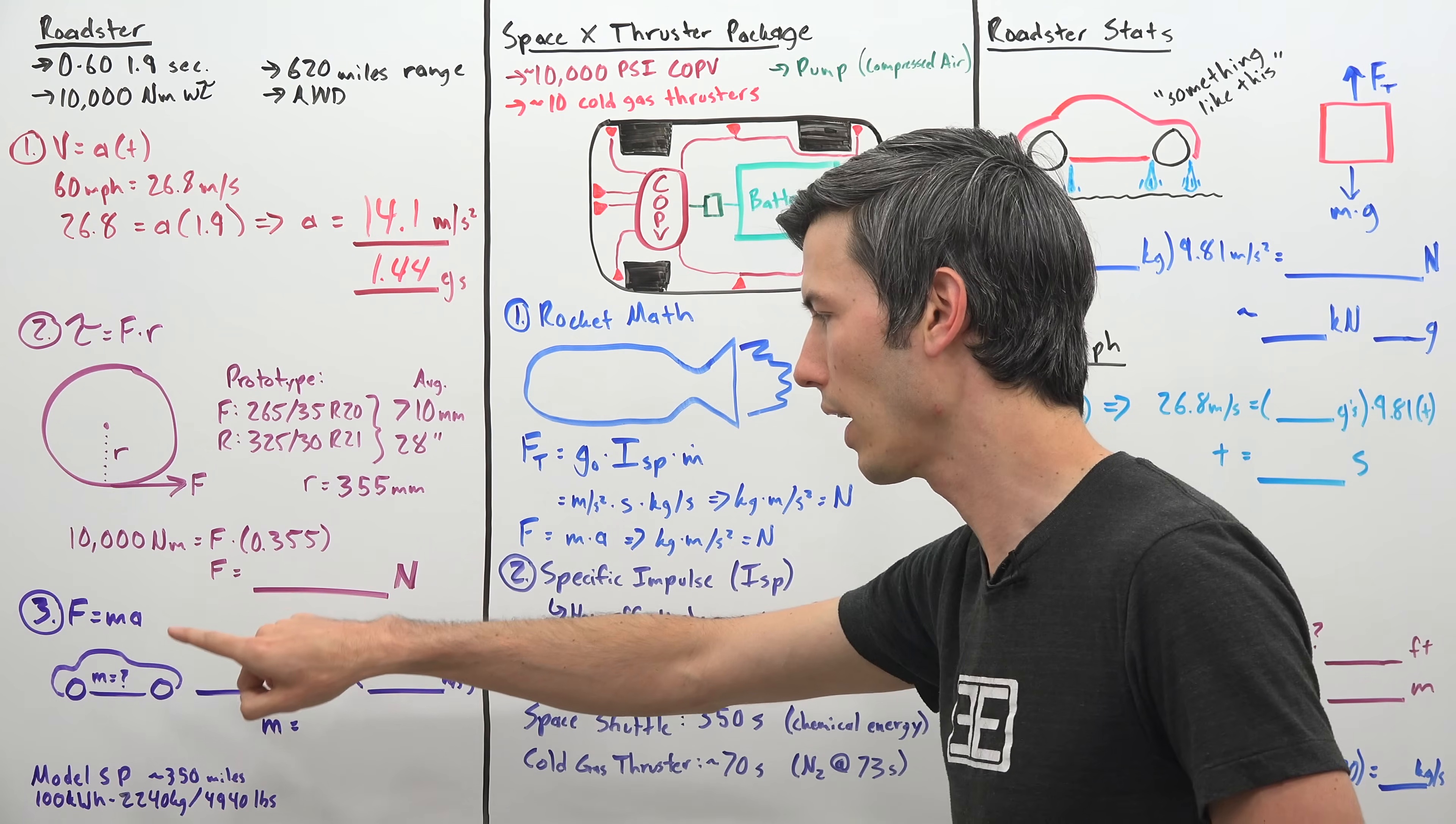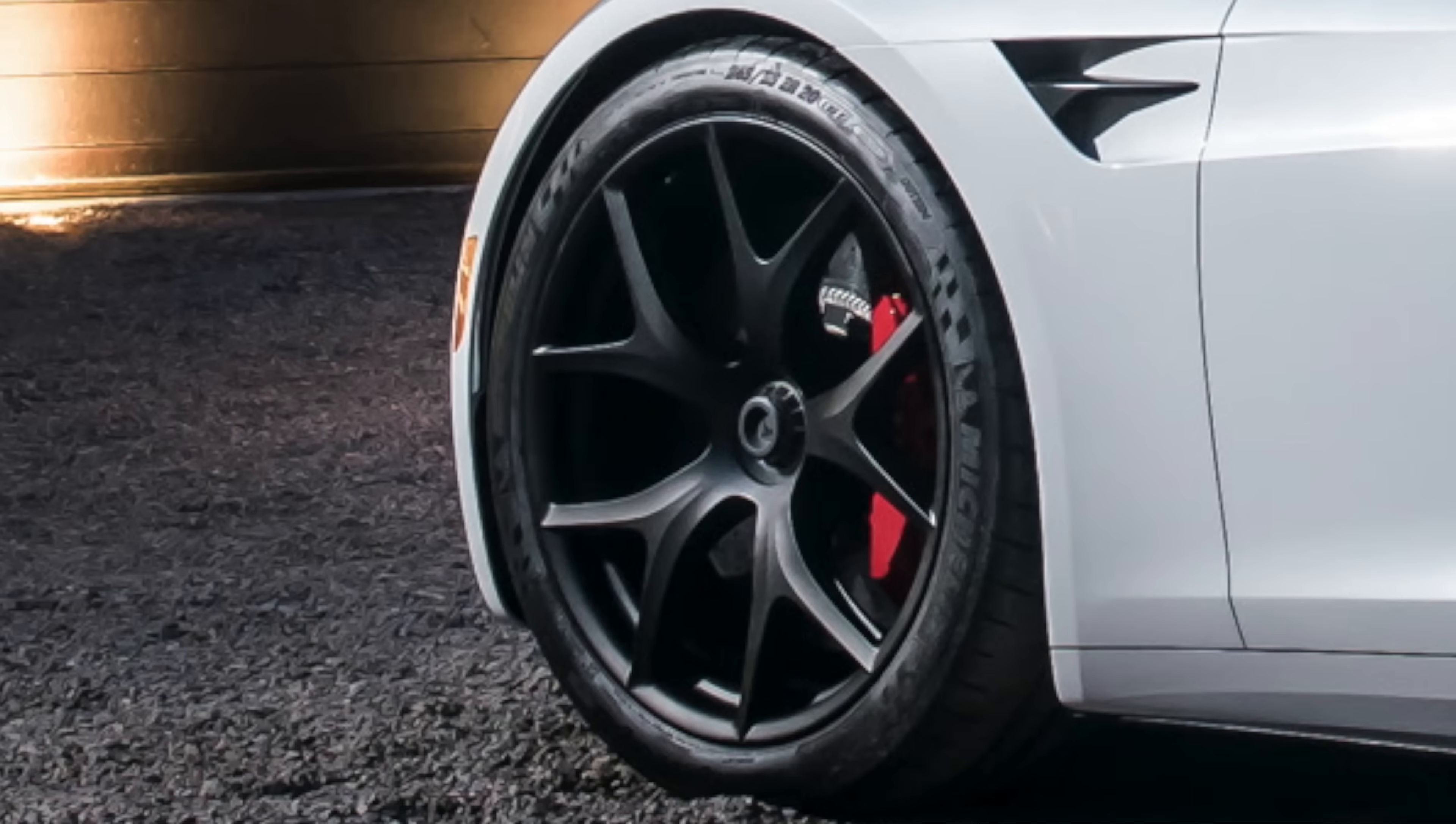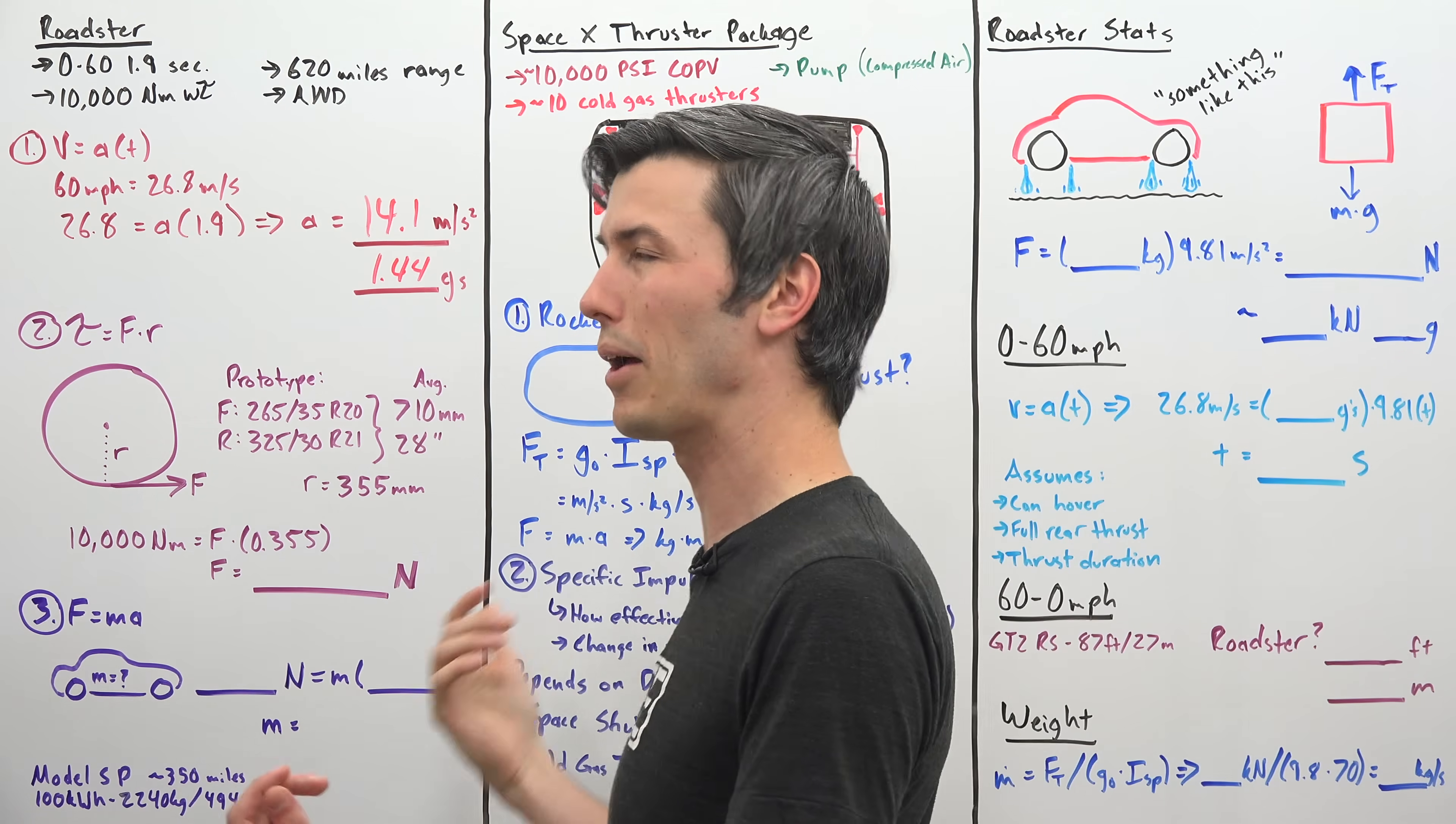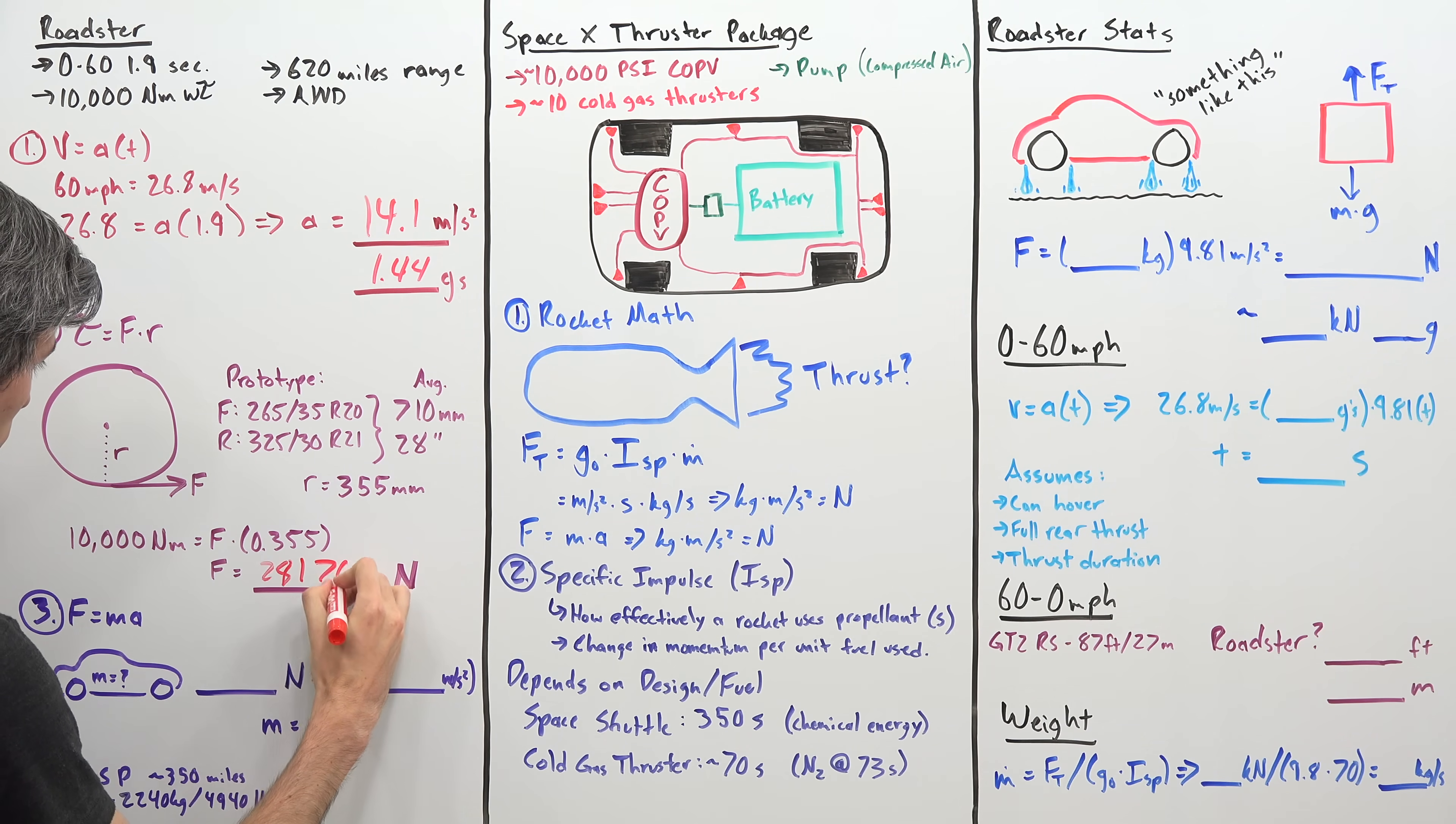So we know what our acceleration is, so now we just need to figure out what our wheel force is. And we're given our wheel torque, so torque is equal to a force multiplied by a radius. So since we know what our torque is, and if we can figure out what the wheel's radius is, then we can figure out what the wheel force is. Now on the prototype Tesla Roadsters, you can see on the front wheel there is a 265 over 35 R20 tire, and on the rear wheel is a 325 over 30 R21 tire. You can do the math to calculate what is the radius of one of these tires, and if you take the average of both of them, you get a diameter average of about 710 millimeters, or about 28 inches. This gives you a radius of 355 millimeters. So we can take our wheel torque number and then divide that by our radius, 0.355 meters, and that gives us a wheel force of 28,170 newtons.